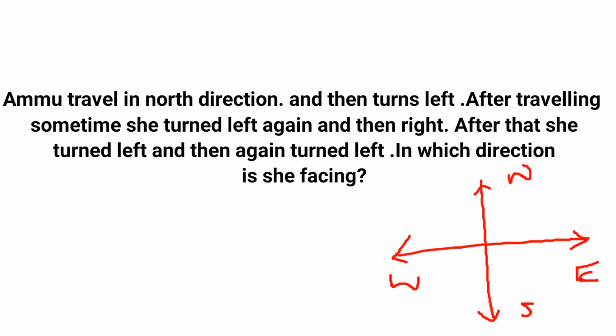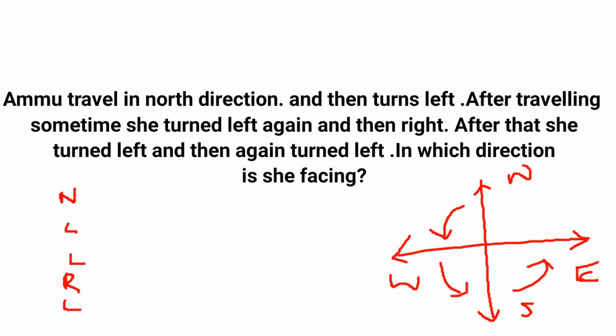Without drawing a figure you can also solve this question. Ammu starts in the northward direction, then turns left. The remaining turns are: left, right, left, left. Cancel one left and one right — remaining is three lefts. Starting from north: first left faces west, second left faces south, third left faces east. So she is facing east.